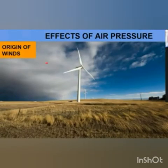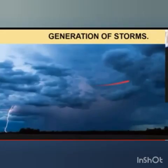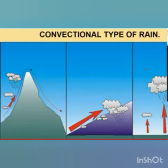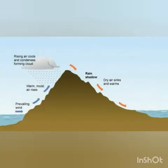Now let us see the effects of air pressure. First is the origin of wind. Second is the generation of storms. And the last is the convectional type of rainfall. Children, can you see the mountain in the diagram? It is raining on one side but not on the other side. Because the mountain is an obstacle, the left side regions will get rain whereas the right side regions will not get any rain. This type of rainfall is called the convectional type of rainfall.